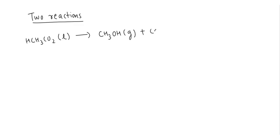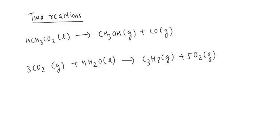Here it is given that a chemical engineer is studying two reactions which are given as HCH3CO2 liquid converting to CH3OH gas and CO gas. While the other reaction is that 3CO2 gas plus 4H2O liquid forms C3H8 gas and 5O2 in the gaseous form.